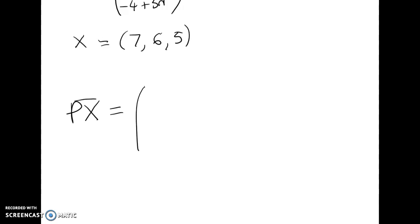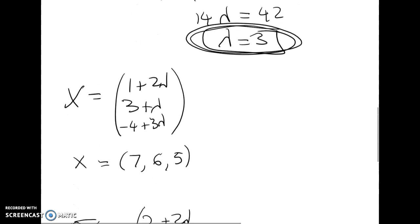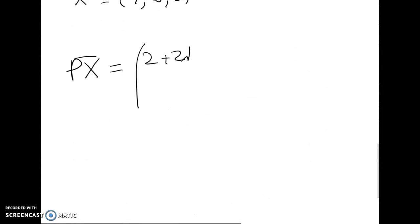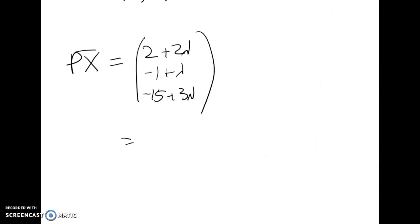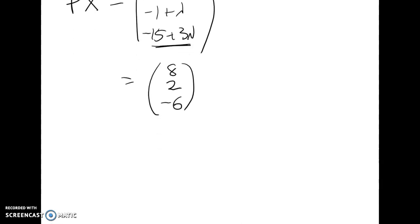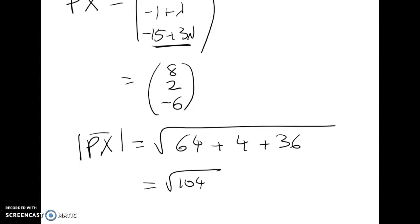So the vector PX is equal to (2 + 2λ, -1 + λ, -15 + 3λ). Subbing in 3 gives me 2 + 6 is 8, -1 + 3 is 2, and -15 + 9 gives me -6. So the distance between the point and the line is this: it's going to be √(64 + 4 + 36), which is √104, which I think works out to be 10.2 to 3SF, but that's the correct answer anyway. So that's the first part of the problem done.